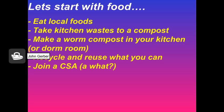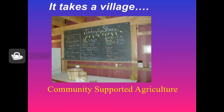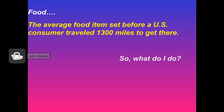I believe in simple solutions. Let's start with food. First of all, eat locally. Take your kitchen waste to a compost. Make a worm compost in your kitchen or your dorm room. Recycle and reuse what you can, and join a CSA — community supported agriculture. Kingsolver wrote that somewhere near you, there's a farmer who desperately needs your support, and you need their good food. Did you know the average food item on your plate has traveled about 1,300 miles to get there?